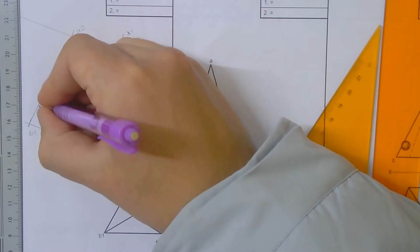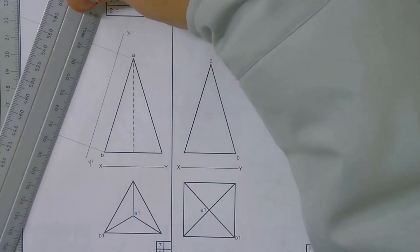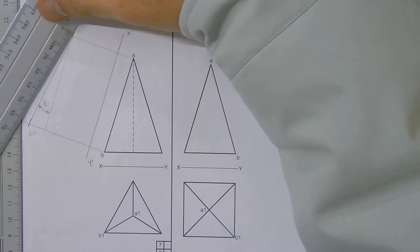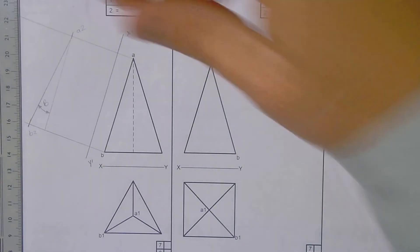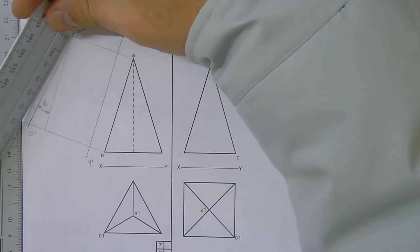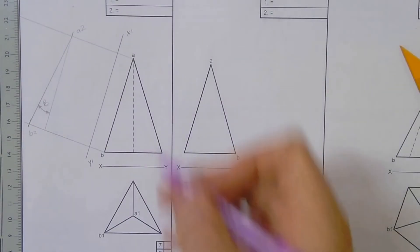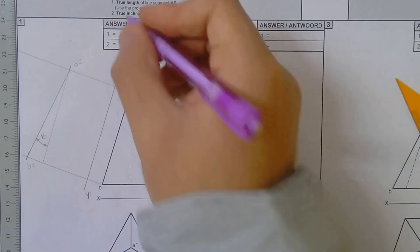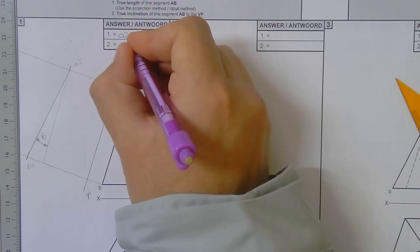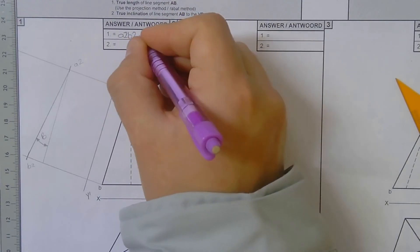Now what we do is go and measure. We're going to measure the darker line, so this line over here, and we get 60. Mine says 60. So then we come to here, it says answer, so you write down there A2 B2, so A2 B2 is equal to 60 millimeters.